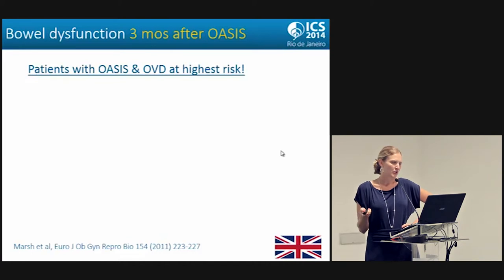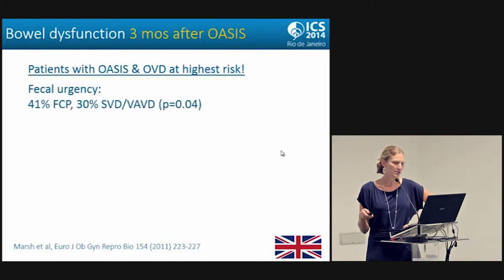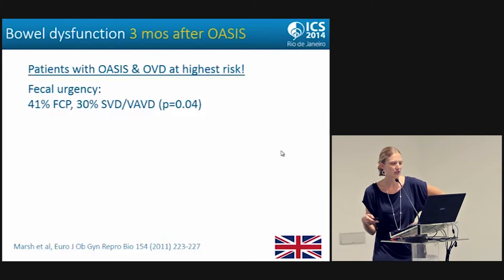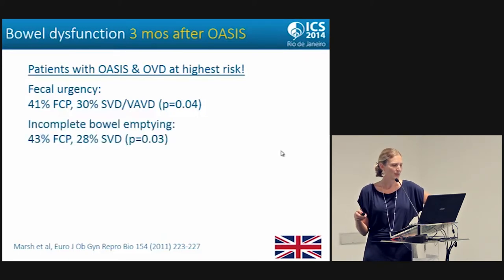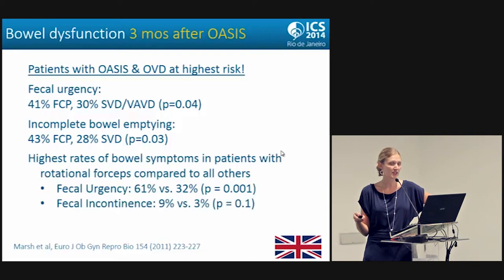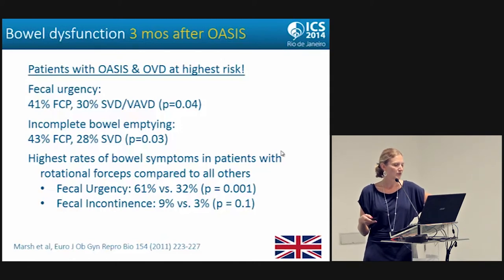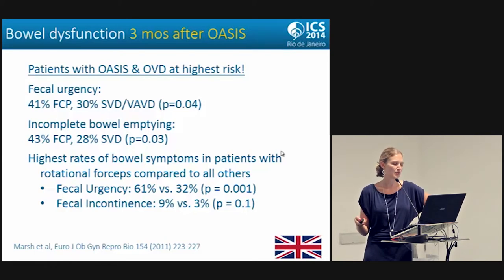Patients with OASIS who have an operative vaginal delivery are at highest risk for bowel dysfunction. For fecal urgency symptoms at three months: 41% of women who had a forceps delivery had fecal urgency, compared to 30% after spontaneous vaginal delivery or vacuum. Incomplete bowel emptying was also more common after forceps than after spontaneous vaginal birth. The highest rates were in women who underwent rotational forceps — fecal urgency in 61% versus 32% of all others, and fecal incontinence in 9% versus 3% of all others, just three months after OASIS.